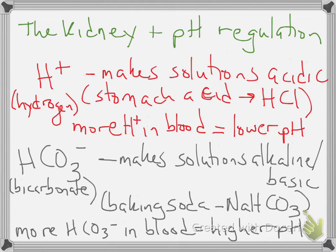Hydrogen ions generally make solutions acidic. One great example is stomach acid — stomach acid is primarily an acid called hydrochloric acid, or HCl. So anytime you're going to try to lower the pH, you want to have more hydrogen ions in the blood.